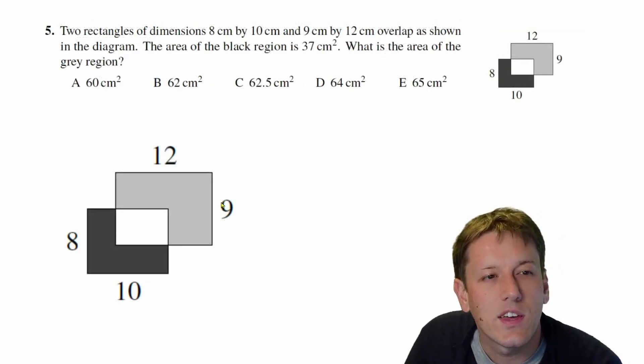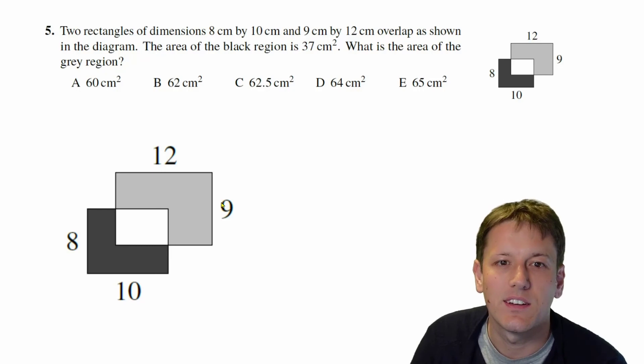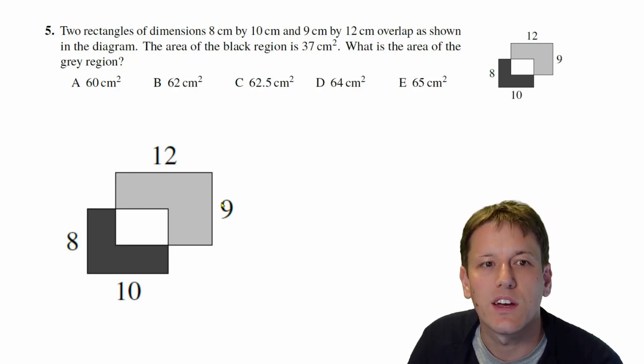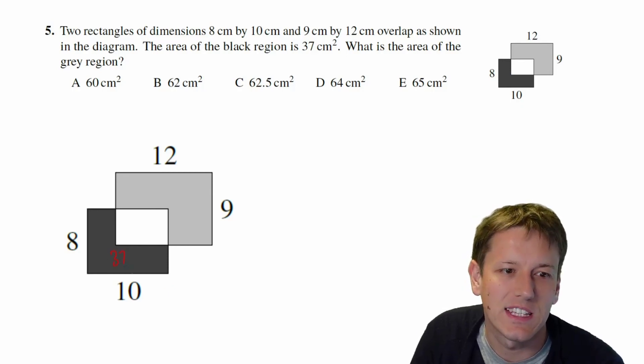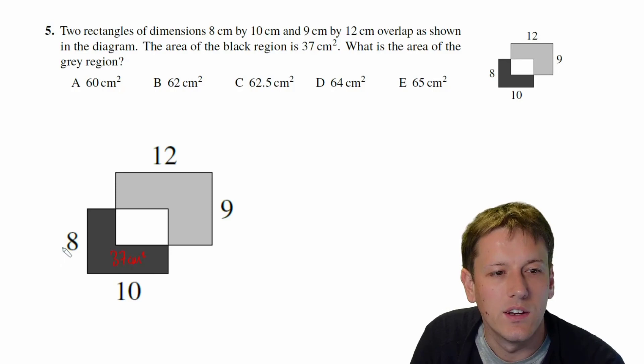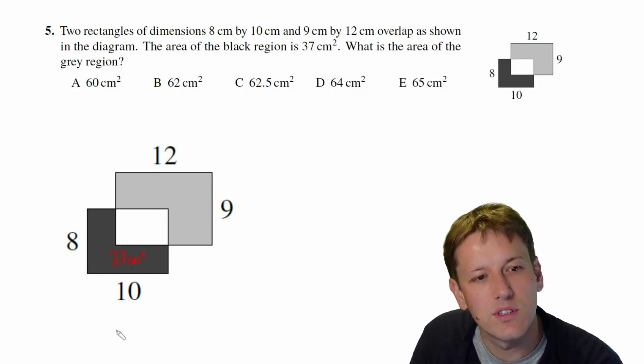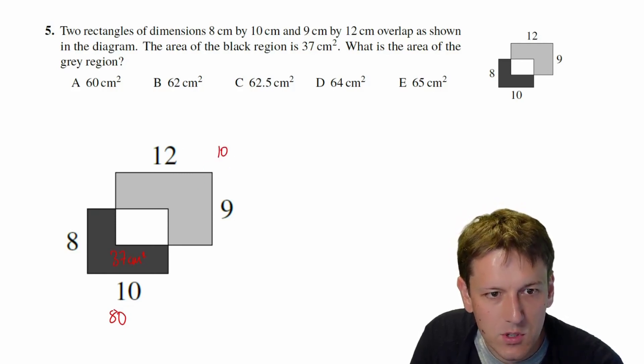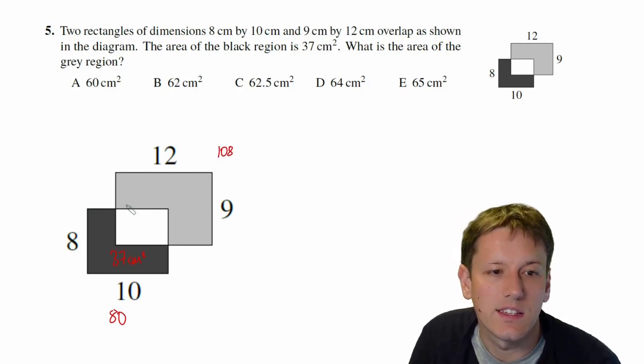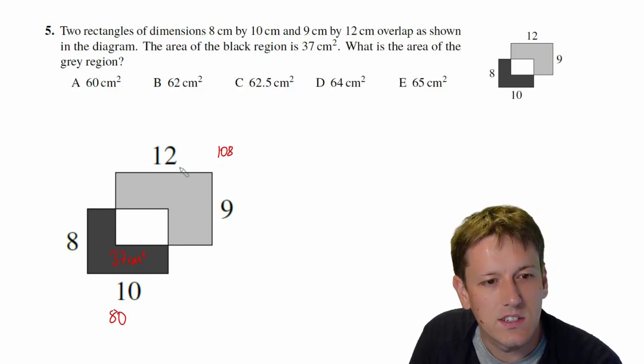In question five, we've got two rectangles of dimensions 8 by 10 and 9 by 12, and they overlap as shown in the diagram. The area of the black region is 37 centimeters squared. What's the area of the gray region? So I've just made a bigger copy of the picture here so I can write on it easily. So this bit is 37 centimeters squared. We know the areas of the rectangles individually, of course this one is 8 by 10 which is 80, and 9 times 12 is 108, so that's the area of this rectangle.